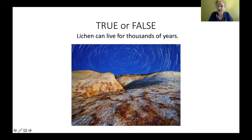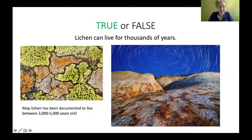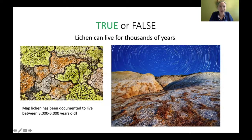True or false: lichen can live for thousands of years. The answer is true. Some map lichen have been documented to live between three thousand and five thousand years old, so lichen can live a really, really long time.